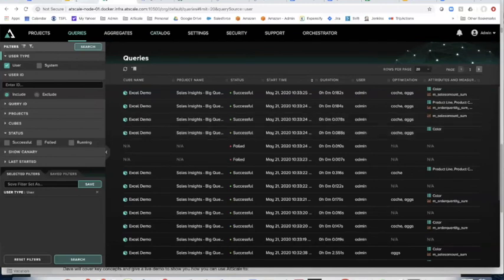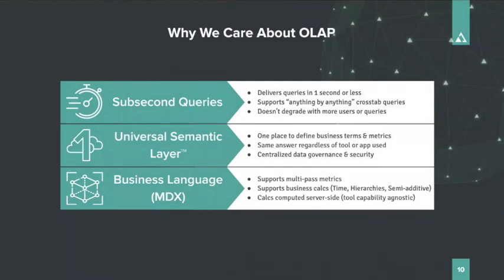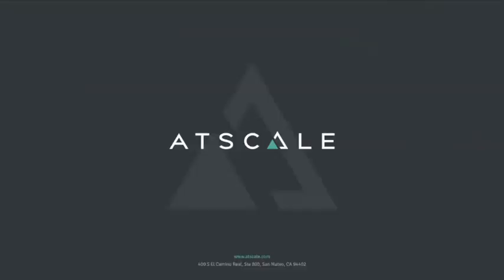Let's bring it all home and review what we just did. You saw we delivered sub-second queries with multiple BI tools — we could have also done Power BI for Microsoft shops, or any BI tool that speaks SQL or MDX. You saw that universal semantic layer with consistent numbers and metadata across multiple BI tools. I didn't cover governance today — that's for another webinar. You saw the power of using hierarchies and time-relative features to do true OLAP without writing complicated SQL. That's the whirlwind tour of Excel on BigQuery — I hope you enjoyed it. Back to you, Carol.